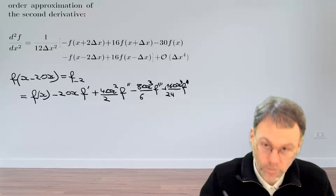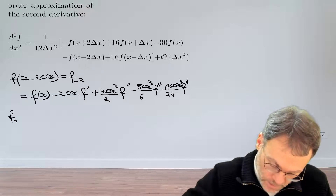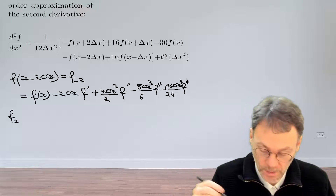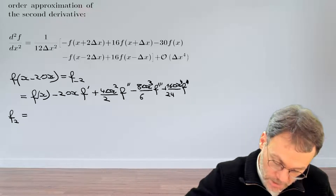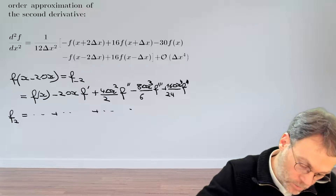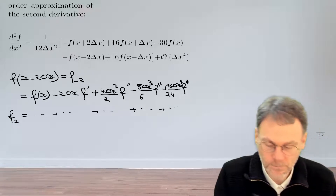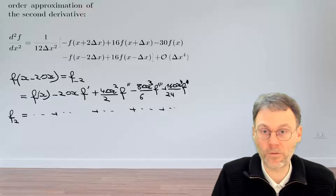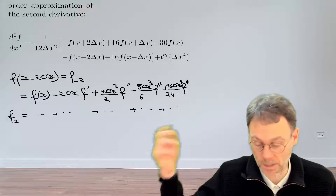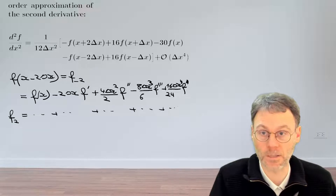Let's do something similar for f at the point 2. So f2 is x plus 2Δx. This is exactly the same thing, but everywhere there's a minus sign, that now becomes a plus sign. So this is what we have for f evaluated at minus 2Δx and plus 2Δx away from our point of interest x.